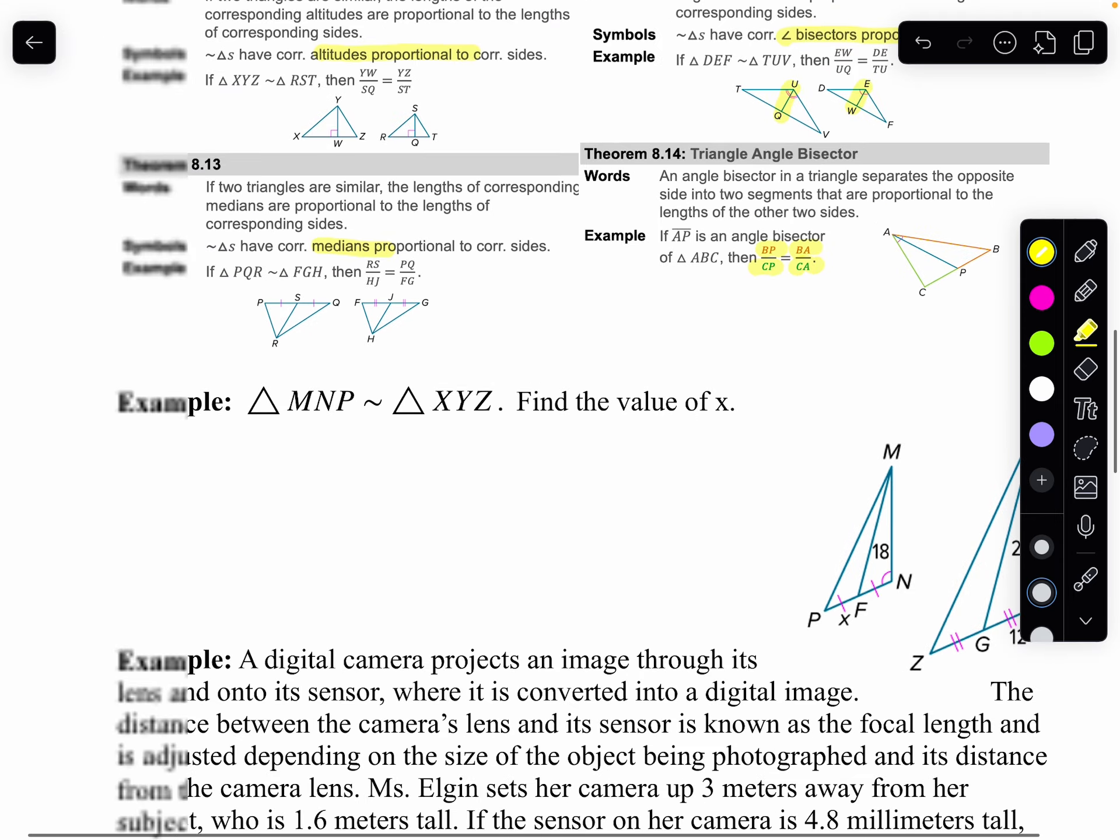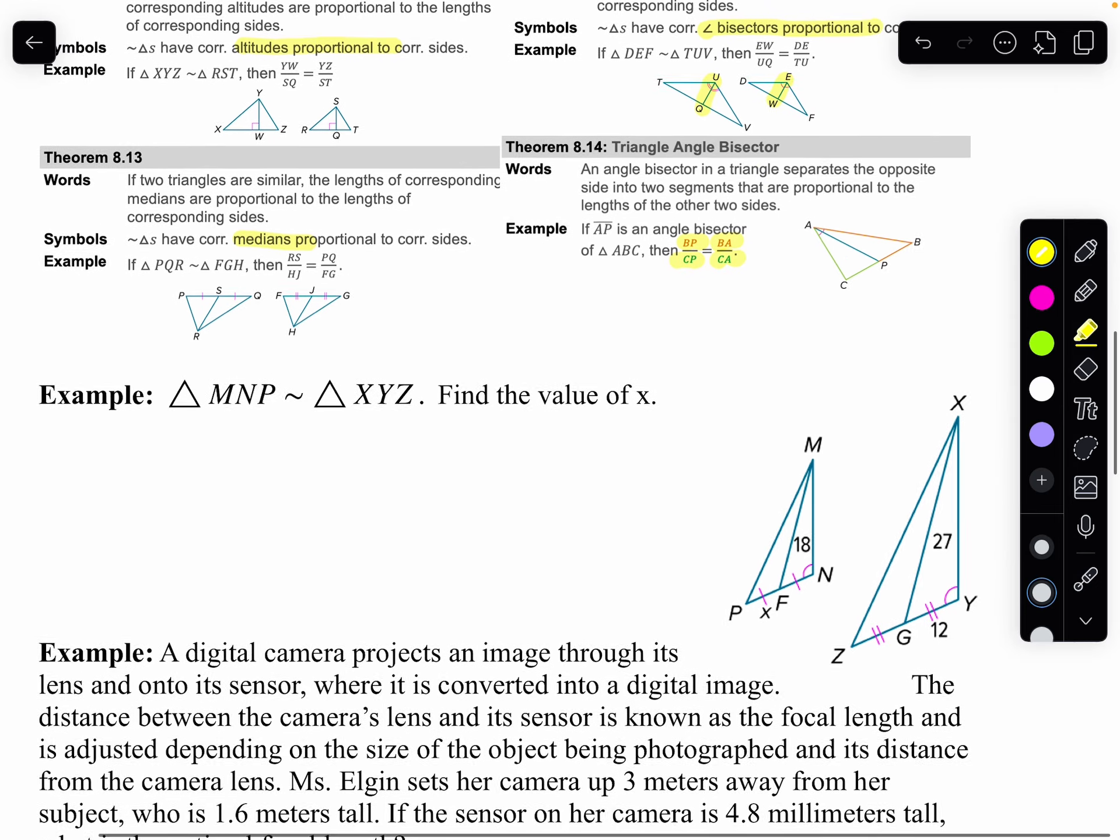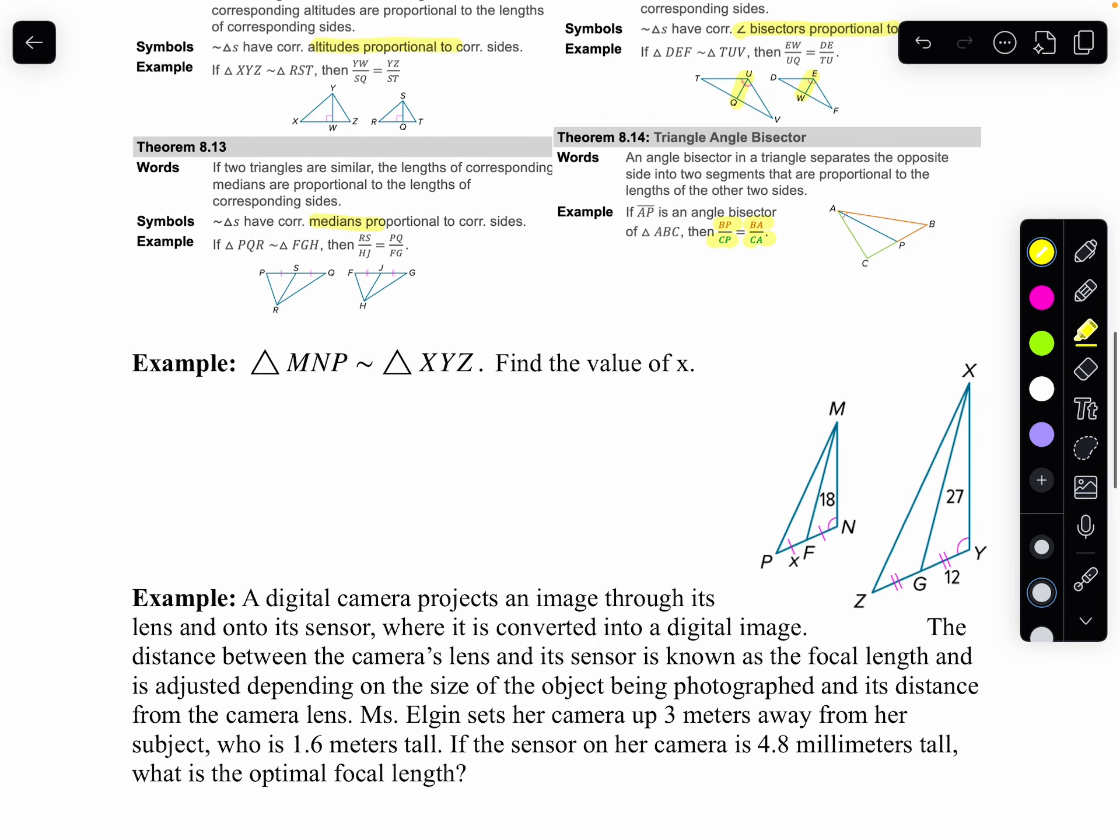Let's start with our first problem here. I want to find the value of X. And notice these are medians. And our triangles are similar, so I know my medians are proportional. And I could just write, I could find the length here. This would be 24. And this would be 2X. But you're going to reduce that anyway, so I'm just going to say 12 is to X.